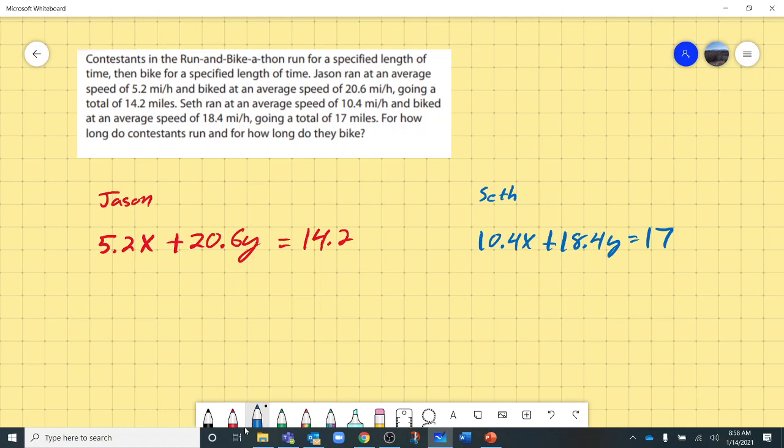But let's look at the other number, 5.2. 5.2 does go into 10.4. Luckily, Seth ran at exactly twice the pace of Jason. It's like it was for a math problem or something.